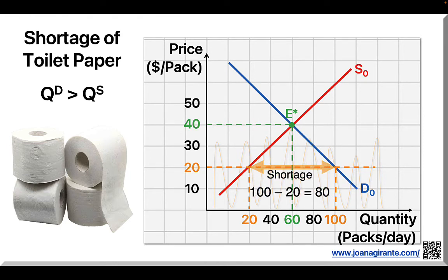Notice how at price $20, quantity demanded exceeds quantity supplied by 80 packs. The difference between quantity demanded, 100, and quantity supplied, 20, means the toilet paper market is incurring a shortage of 80 packs.